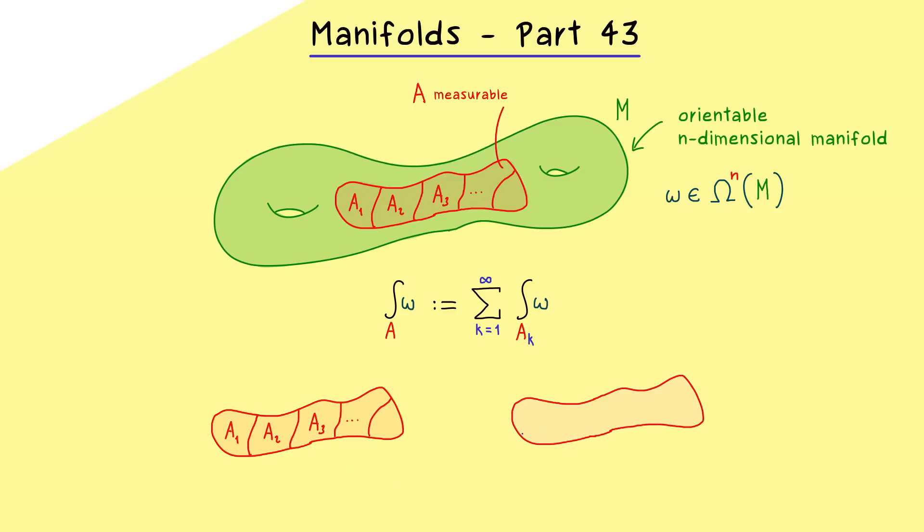Just imagine that someone tells you that he wants to calculate the integral over A with another decomposition. And in order to keep the notation clear, let's say that these sets are called A1 tilde, A2 tilde and so on. Hence now we can also calculate the whole sum with respect to these subsets. And now the question is, do we get the same result as before? And obviously we want to have that, so we will prove it in this video.